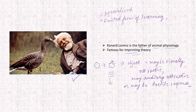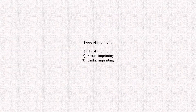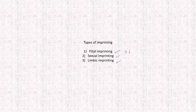Examples are humans and animals. The types of imprinting are: first, filial imprinting; second, sexual imprinting; third, limbic imprinting. Filial imprinting describes the relationship between the parent and their children.